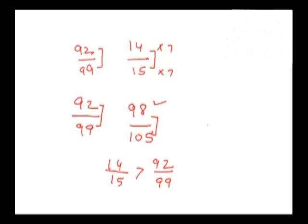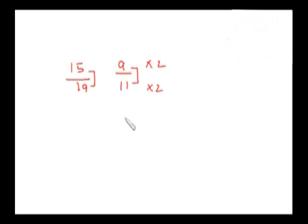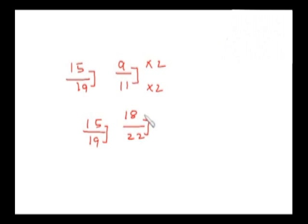Let's take one more problem. I am having the fractions 15 by 19 and 9 by 11. The difference between numerator and denominator is 4 and in this case it is 2. By multiplying 9 by 11 by 2, I get 18 by 22. Now in both cases the difference between numerator and denominator is 4. Since the numerator 18 is higher than 15, 9 by 11 is greater than 15 by 19.